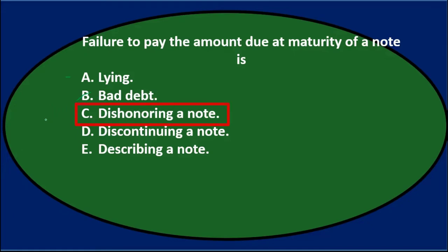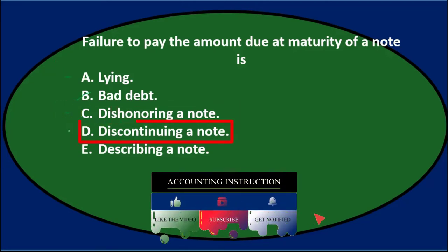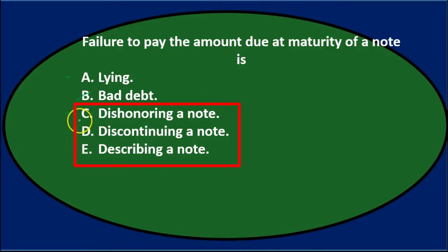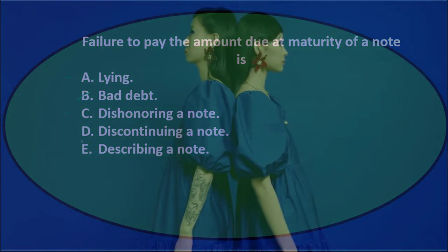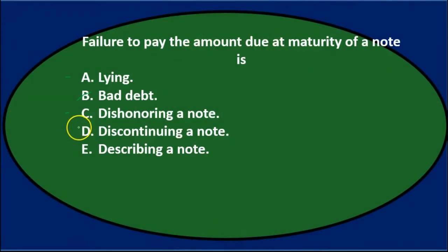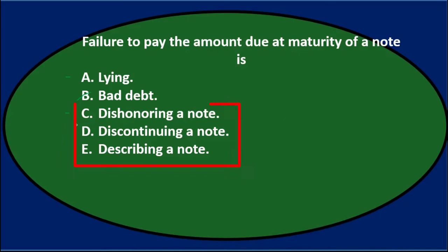C says dishonoring a note — that sounds similar to lying. D says discontinuing a note and E says describing a note. All three of these sound very similar, which means they may be trying to play on the fact that these three are similar-sounding — kind of trying to trick us on those three.